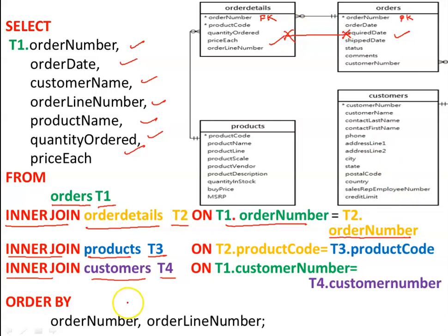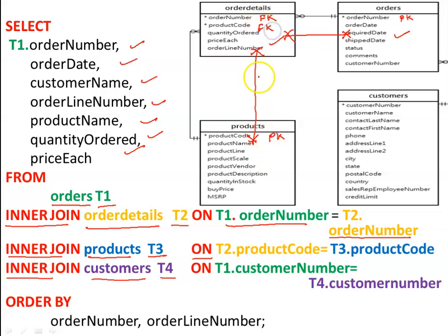Next we move to the products table, renamed as T3. The join condition is the association between the order details table and the products table. Product code is acting as a primary key in products and as a foreign key in the order details table. The order details table is T2 and the products table is T3, so the join condition is T2.product_code = T3.product_code.